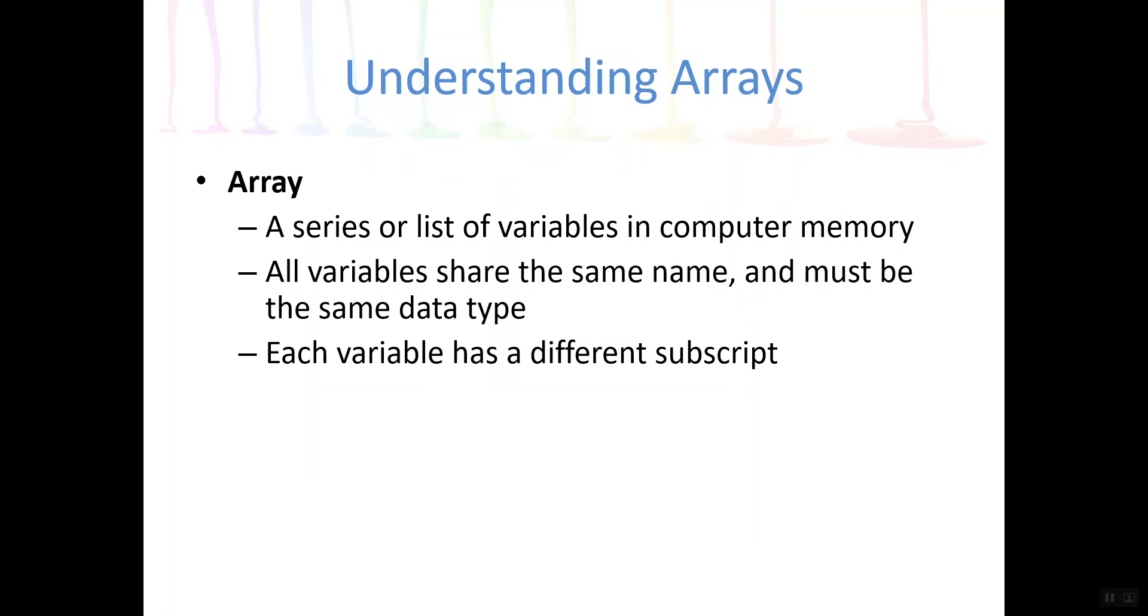Basically we can use arrays when we have a collection of related values that we want to work with where they're all of the same data type. We need to have a way to be able to refer to each individual value. So for example if a student Chad in the course, we need to get Chad's exam score, we have to have a way to be able to identify an individual exam score in the collection. But basically that's what an array is, a collection of like variables that have the same name.